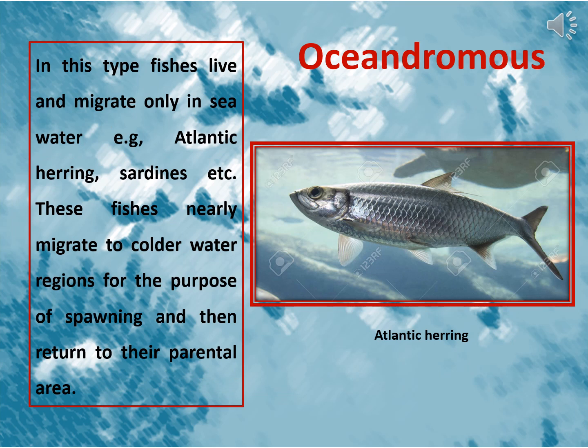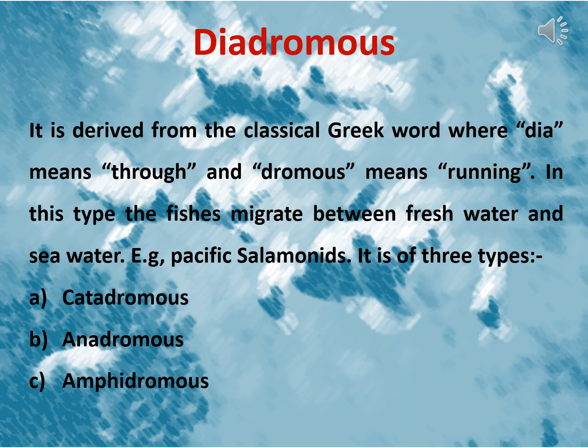Another type is Oceanodromus. In this type of migration, fishes live and migrate only in seawater. Examples of these fishes are Atlantic herrings, sardines, etc. These fishes nearly migrate to colder water regions for the purpose of spawning and then return to their parental area. In Diadromus type of migration, fishes migrate between freshwater and seawater. Example: Pacific salmonids.